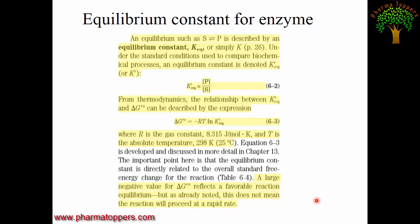A large negative value for delta G reflects a favorable reaction equilibrium. However, it does not mean the reaction will proceed at a rapid rate. If you have a large K_eq, it means a higher product concentration and a more favorable reaction, but the rate may still be slow.